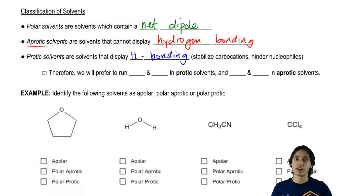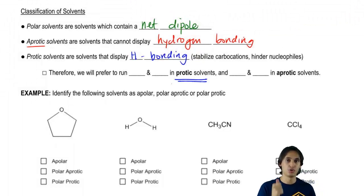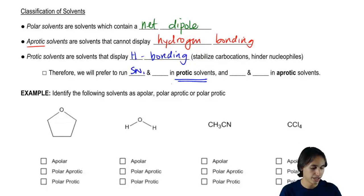we've learned four mechanisms so far: SN1, SN2, E1 and E2. What kind of mechanisms would I prefer to have a protic solvent in? Think about what protic means. It means it can hydrogen bond. So what would be a good mechanism to have with a protic solvent? Good. So it would be one that has carbocations, so that would be SN1 and E1.